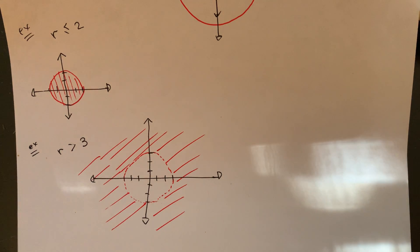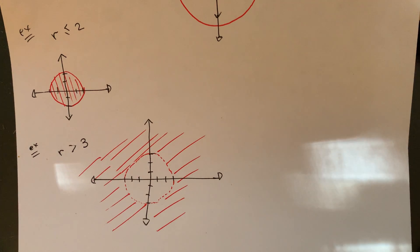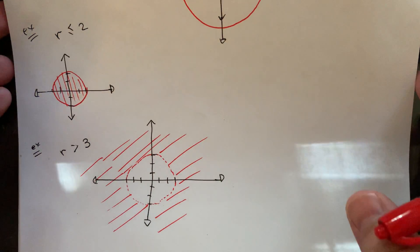So circles are really easy to sort of have equations for in polar coordinates because it just is radius equal to whatever. It's a pretty simple setup.